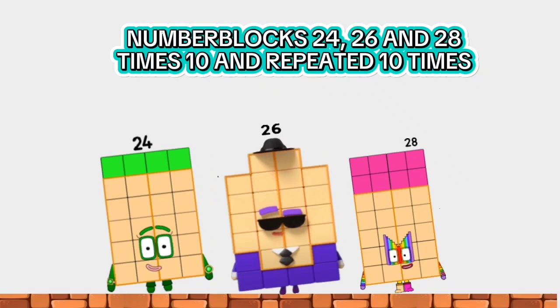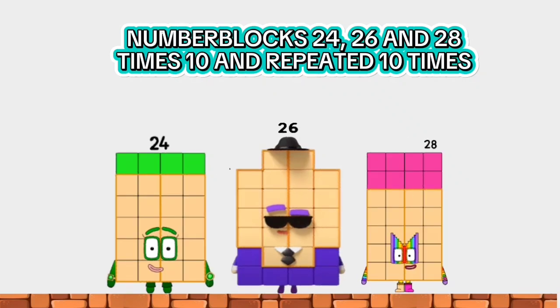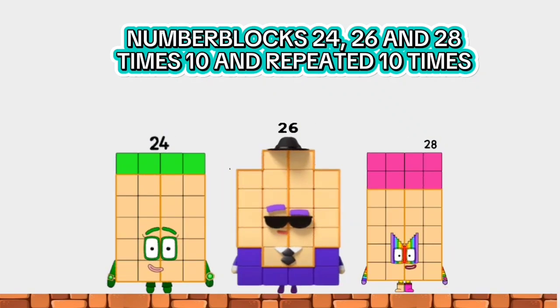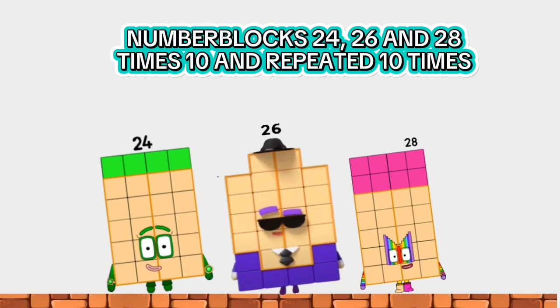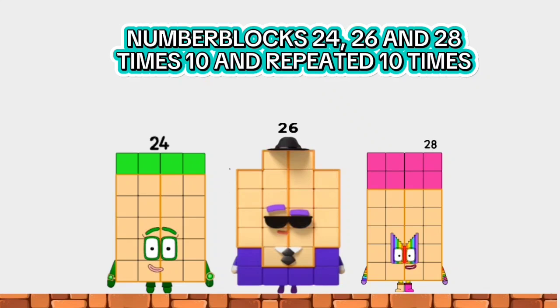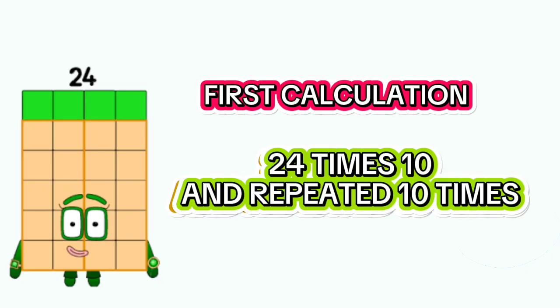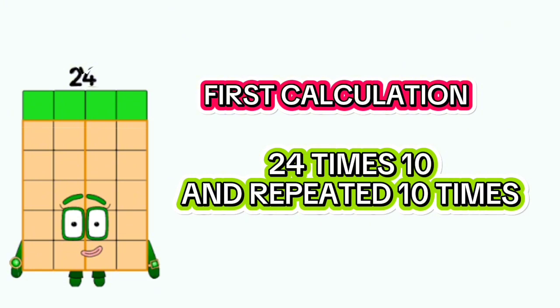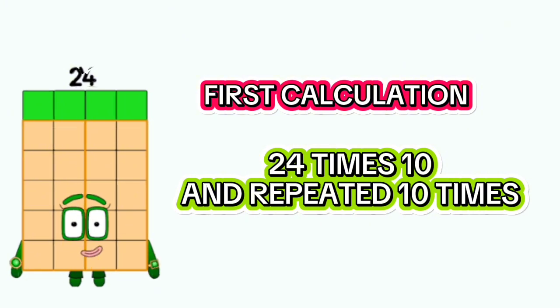Number blocks 24, 26 and 28, times 10 and repeated 10 times. First calculation: number blocks 24, times 10 and repeated 10 times.